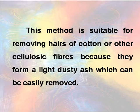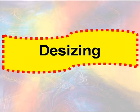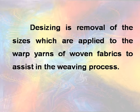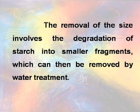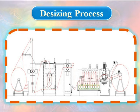Desizing is the removal of sizes which are applied to the warp yarns or woven fabrics to assist in the weaving process. The removal of size involves the degradation of starch into smaller fragments which can then be removed by water treatment. For this, the cloth may be soaked in a dilute solution of sulphuric acid or hydrochloric acid for two or three hours.